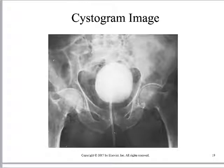The voiding cystourethrogram — we still do this occasionally. We fill the bladder with contrast and then have the patient void, observing whether they are able to void completely. For the most part, we don't do these as much anymore, because most patients receiving an abdomen and pelvis CT scan get a bladder scan at the end where a quick picture is taken of the contrast-filled bladder.